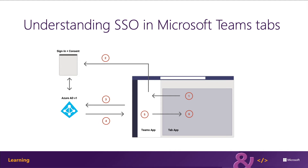In step six, the token is parsed in the tab application using JavaScript to extract the required information, such as the user's email address. From here, they can step up the authentication and use this ID token to obtain an access token from Azure AD for Microsoft Graph.